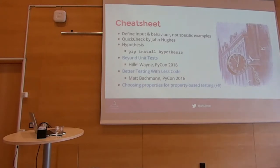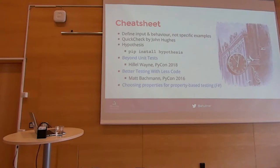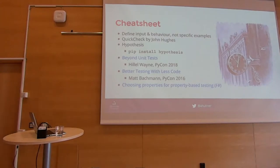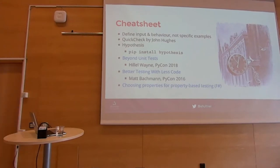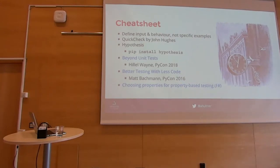Here's my quick cheat sheet. It's about defining input and behavior, not specific examples, although you can do that if you want to specifically try some things. I recommend looking at QuickCheck by John Hughes — that's how I got introduced to it, by taking a course at Chalmers a few years back. I took the course because I'm a hobbyist Lisp hacker and wanted to try out Haskell, but the greatest takeaway was probably property-based testing, something I did not expect. Hypothesis is basically a port of QuickCheck to Python, but with other concepts added on top, making it easier to use and very powerful.